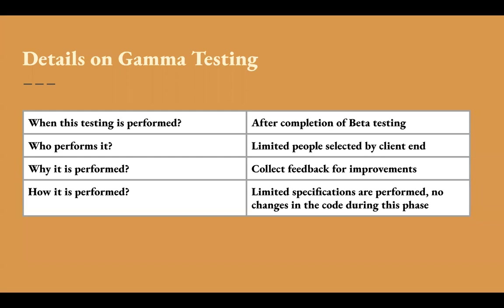Only a limited number of people selected by the client perform gamma testing, and they are not developers or QA engineers. They are end users who don't know anything about the code. They perform the testing and collect all their feedback, any issues found, any improvements they analyzed, or any ideas to enhance the product. All the feedback is collected from those people at the end and considered as improvements for the next upcoming versions of the software product.